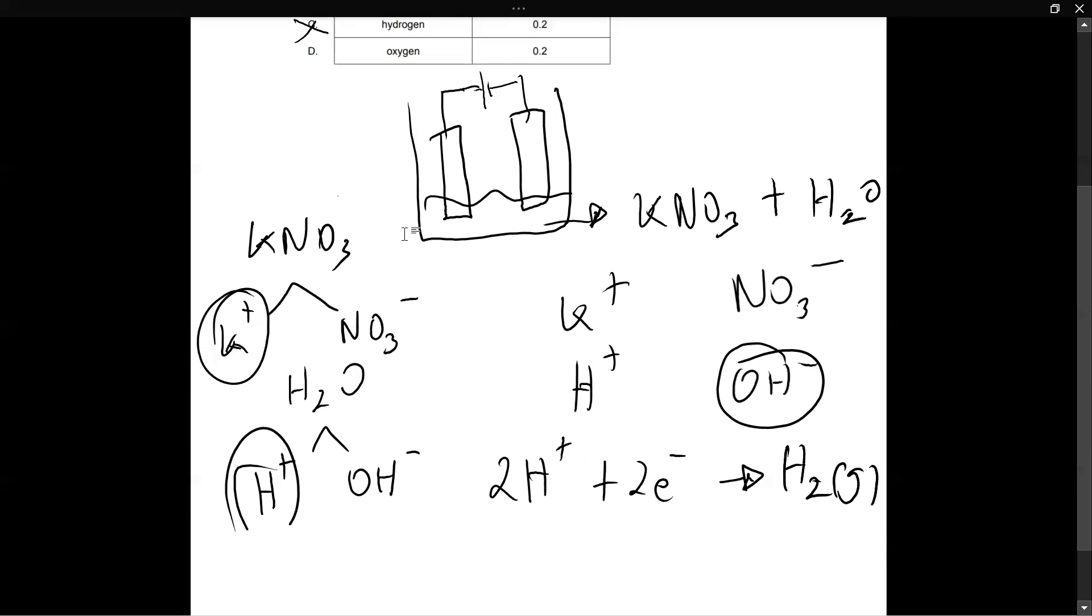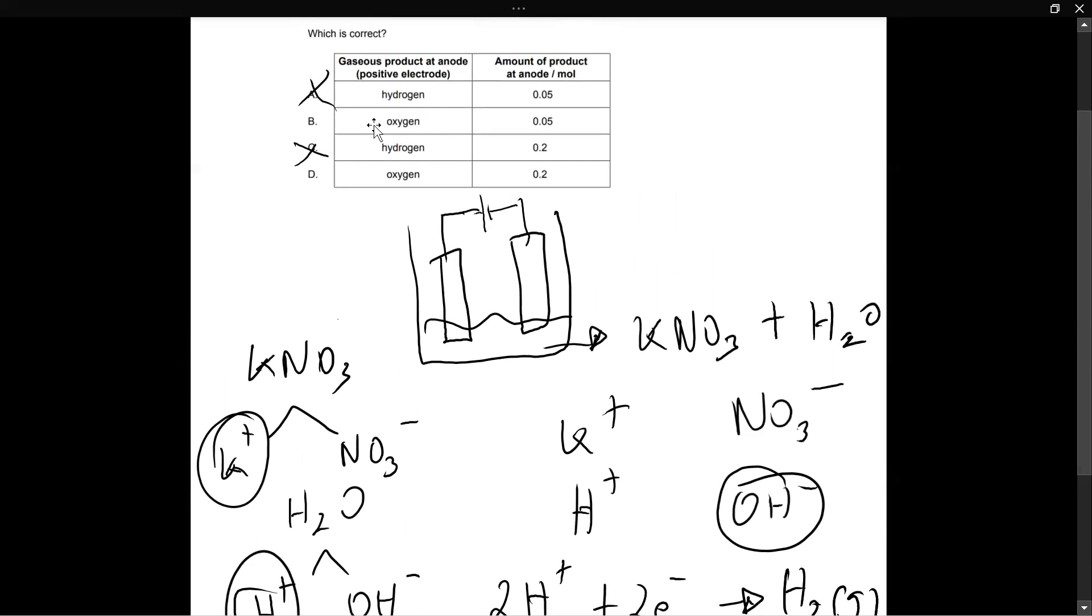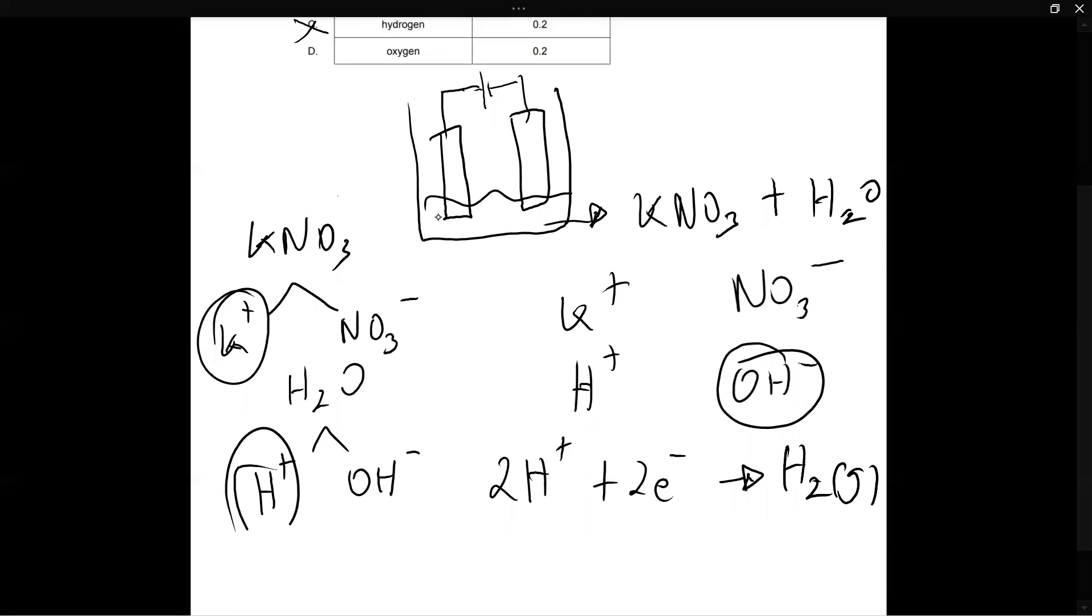Now that happens at the cathode. So in the options where they say that hydrogen is produced at the anode, that's completely wrong. That doesn't happen. So we can eliminate A and C. Now we're left with B and D. They are telling us that the gaseous product, both of these options have listed their gaseous product as oxygen. And if you see this, it's not possible for NO3 to oxidize and produce oxygen gas. That just doesn't work.